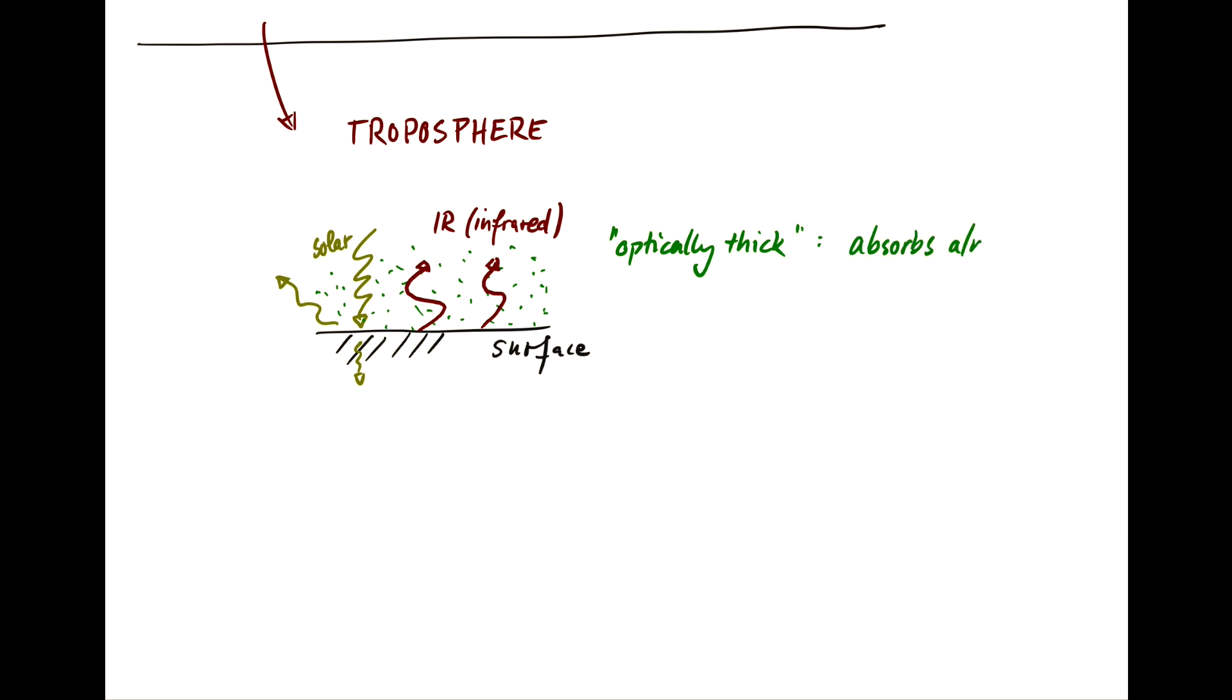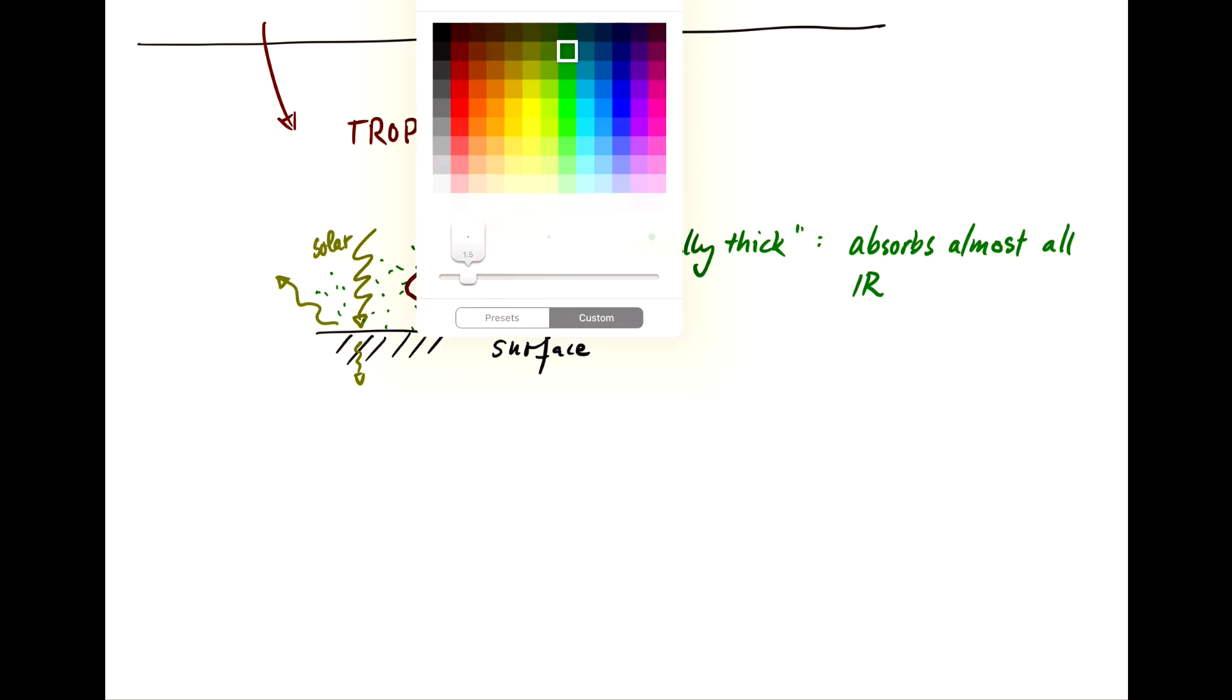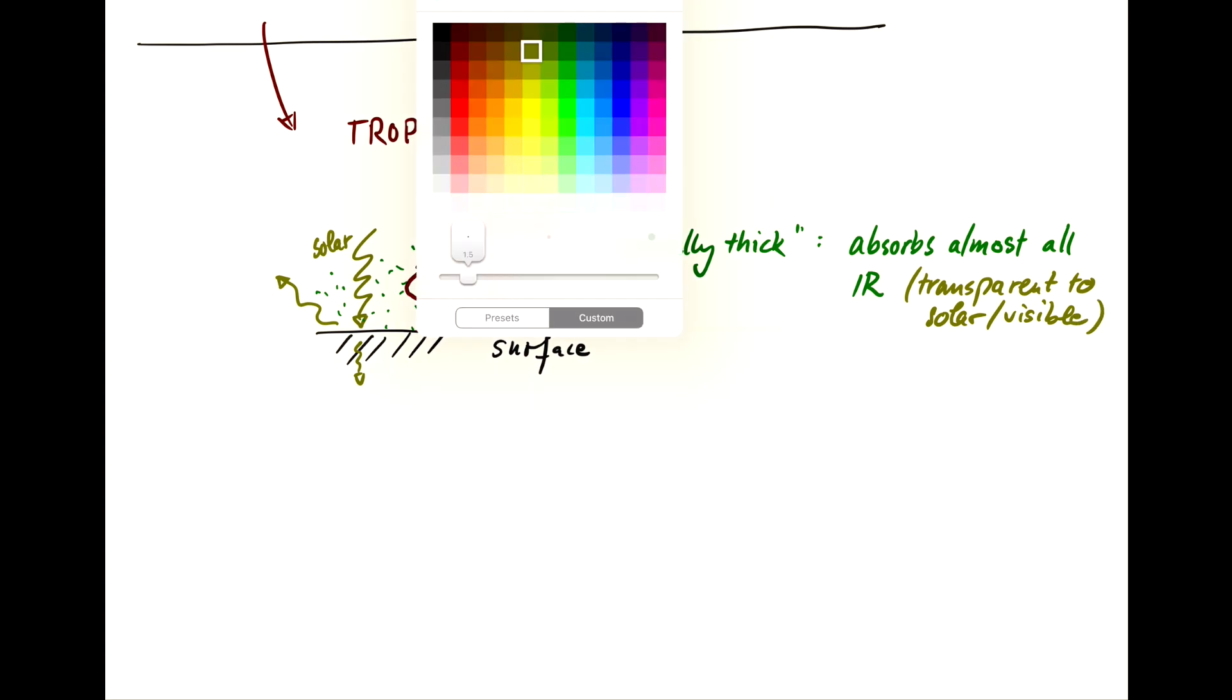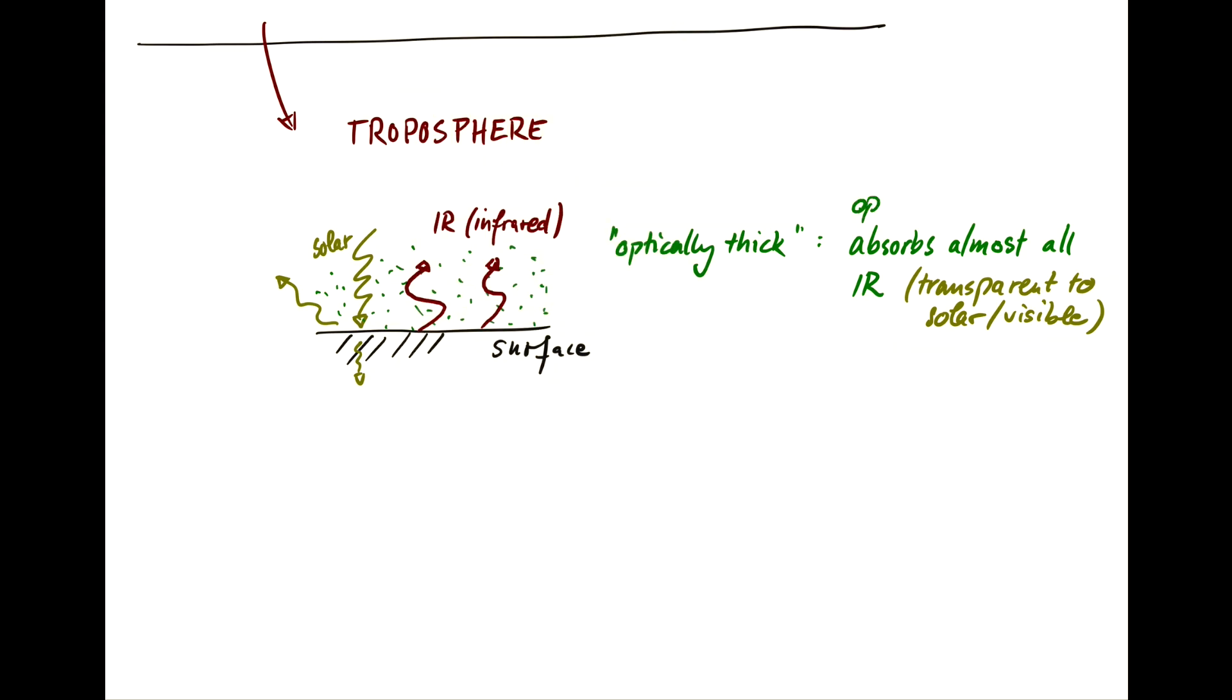The thing is, the troposphere is optically thick, which means it absorbs almost all infrared radiation. It's still transparent to most solar radiation and visible light, but it absorbs the infrared. We say that it is opaque for infrared radiation, and that means this infrared radiation heats the atmosphere near the surface.